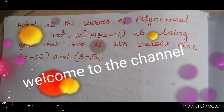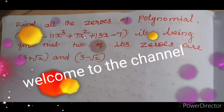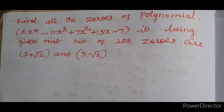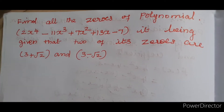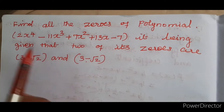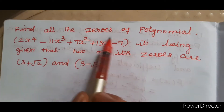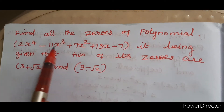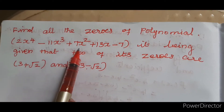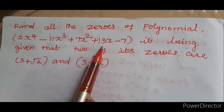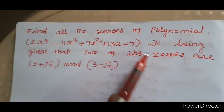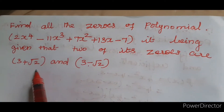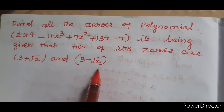Hi, I am Vimal Ashwath. Today I am going to take one important problem in polynomial. The question is: find all the zeros of the polynomial 2x⁴ minus 11x³ plus 7x² plus 13x minus 7, given that 2 of its zeros are 3 plus root 2 and 3 minus root 2.